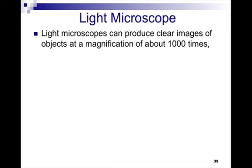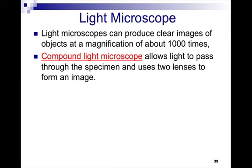The light microscope can produce clear images of objects at a magnification of about 1,000 times. The type that we use in school is called a compound light microscope which allows light to pass through the specimen and uses two lenses, and that's key as you are answering some of the questions—you're going to use two lenses in order to form your image.